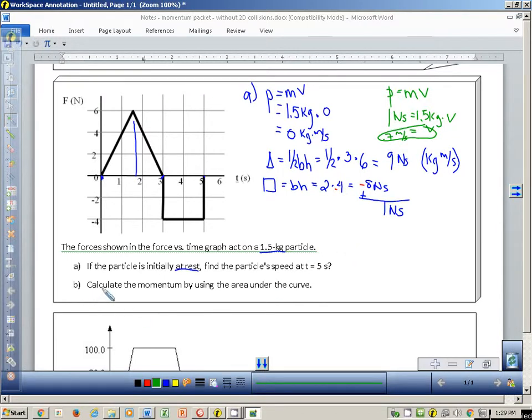And where it says B, calculate the momentum by using the area under the curve. Well, that would be this right here. The answer to that is one Newton second.